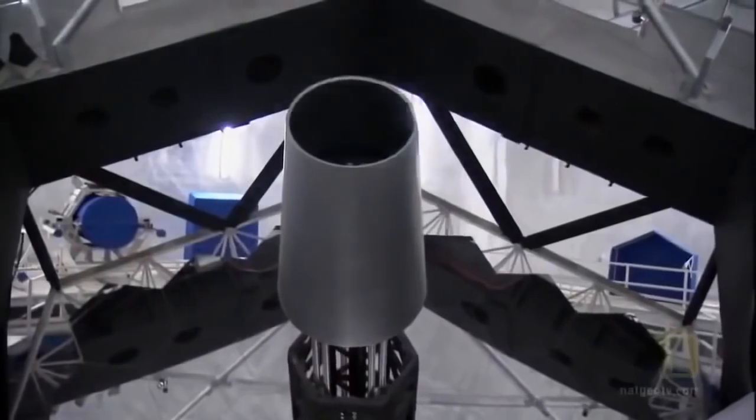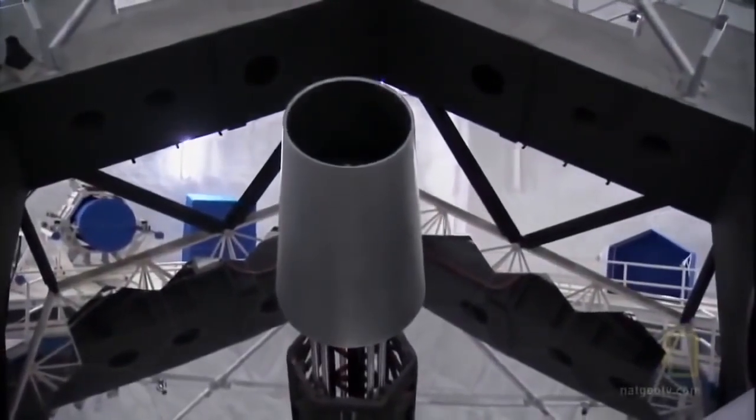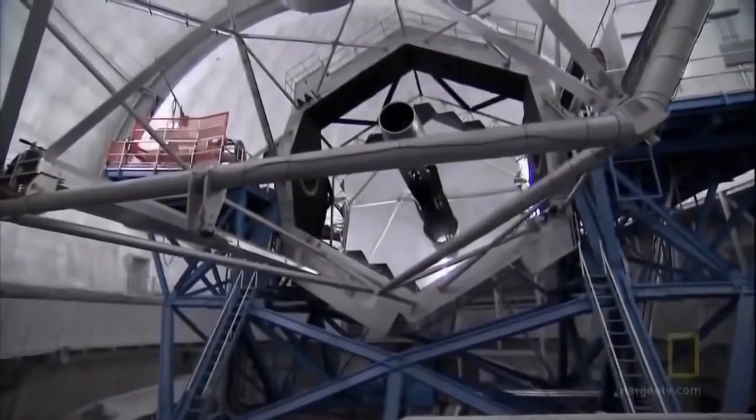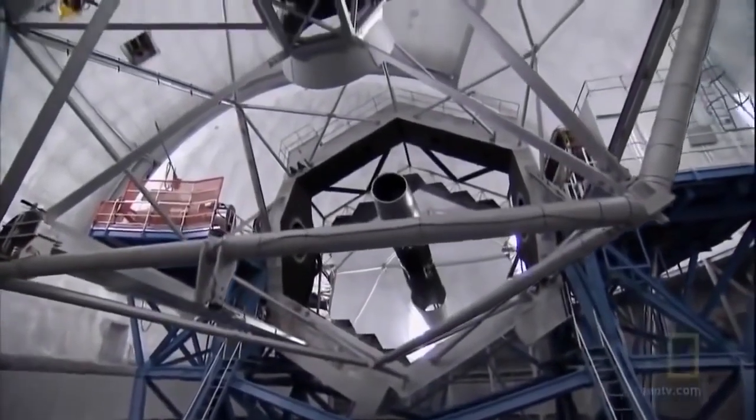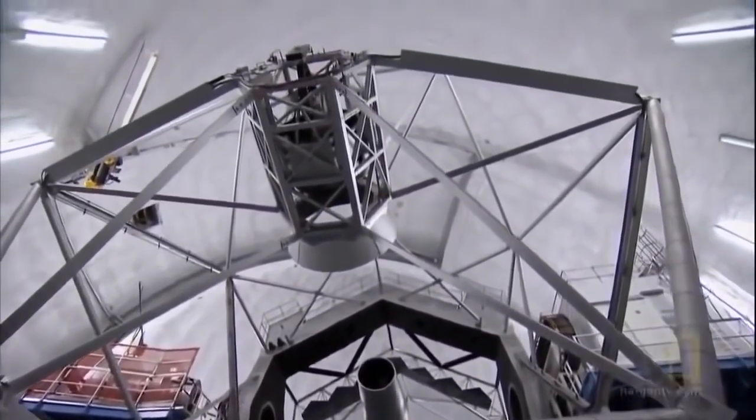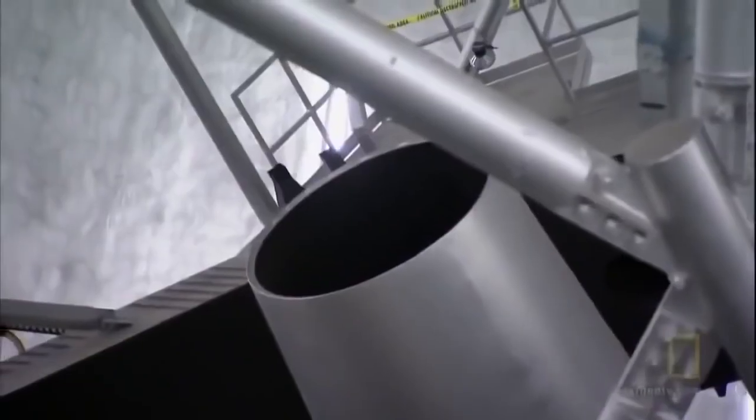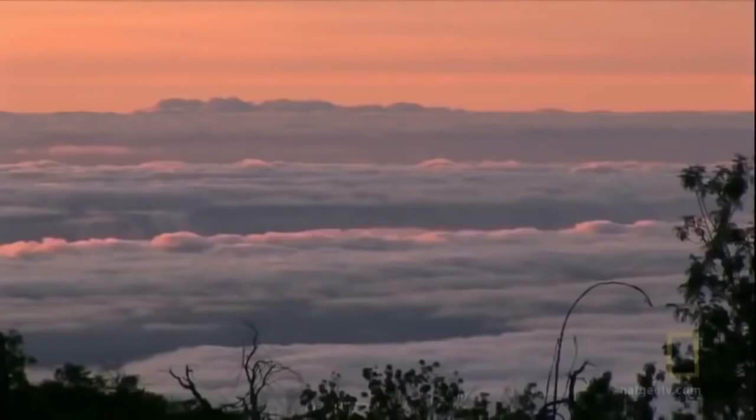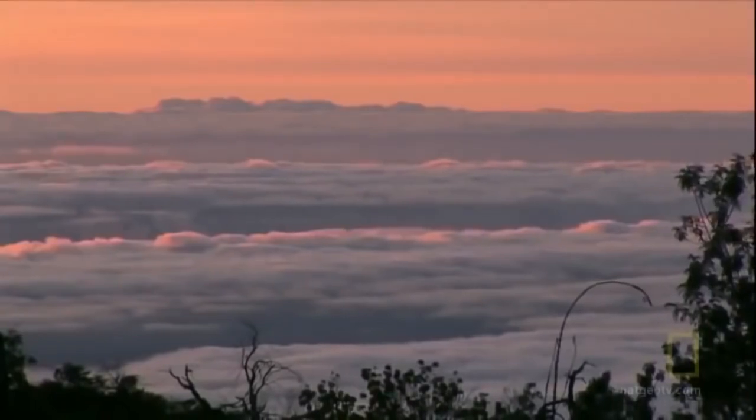At an elevation of nearly 14,000 feet, the Keck telescopes bring astronomers from all over the world nearer to space for a clearer view of the cosmos. They come here because the telescopes work best far away from city lights and as high as possible above Earth's polluted air.